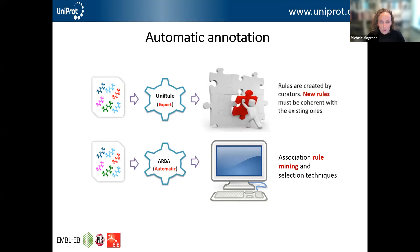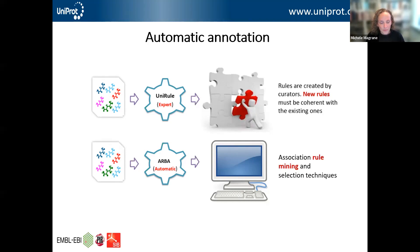We have a system called UniRule — a rule-based system where, although the system itself is applied automatically, the rules are manually created by curators. UniRule makes use of InterPro to group related proteins together and also makes use of the high quality information in the Swiss-Prot section. By using InterPro we can see related proteins and what information they share in Swiss-Prot, and then rules can be created so that information can be applied to related proteins in the unreviewed TrEMBL section. We also have a second system called ARBA, which is completely automated and applies information through rule mining.